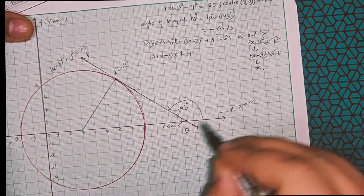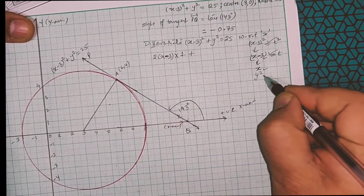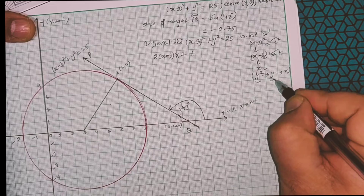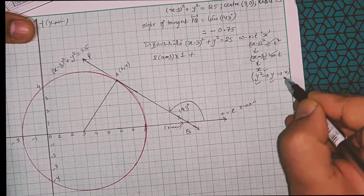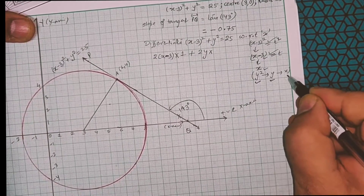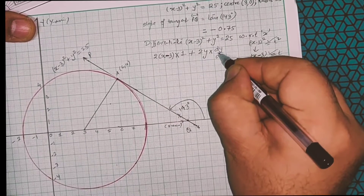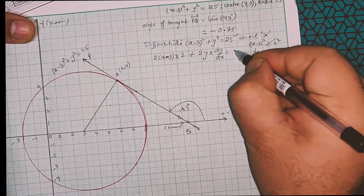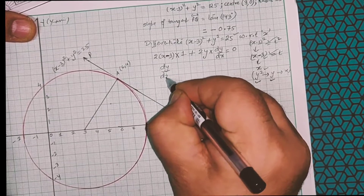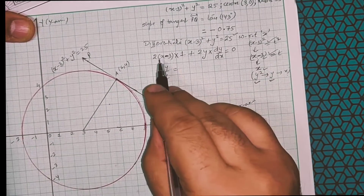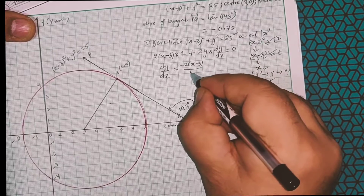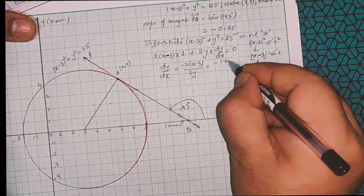For the second term, since y² depends on y and y depends on x, I apply the chain rule again: derivative of y² with respect to y is 2y, multiplied by dy/dx. The derivative of the constant 25 is 0. Rearranging the algebra gives dy/dx = −2(x−3) / (2y), which simplifies to dy/dx = −(x−3)/y.